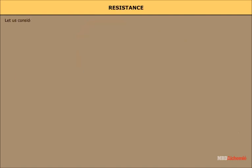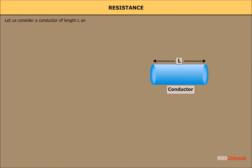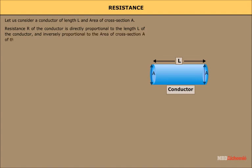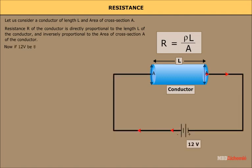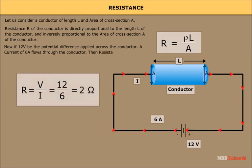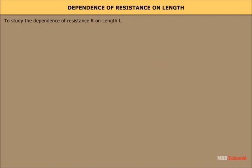Resistance. Let us consider a conductor of length L and area of cross section A. Resistance R of the conductor is directly proportional to the length L and inversely proportional to the area of cross section A. If 12 volts is the potential difference applied across the conductor, a current of 6 Amperes flows, giving resistance R as 12 divided by 6, that is 2 Ohms.